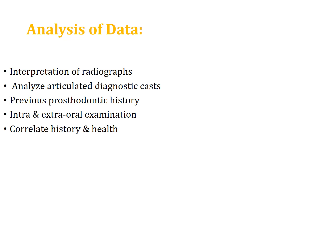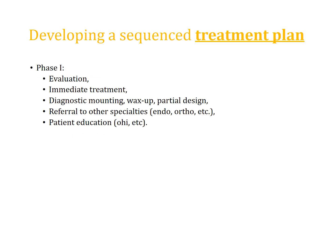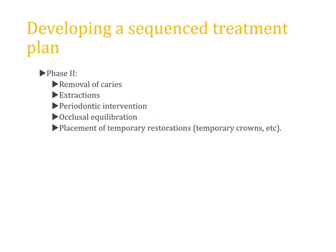You have to analyze all these factors — the radiograph, diagnostic cast, dental history, medical history, intraoral examination, and overall health of the patient — to formulate the treatment plan. The various phases of treatment are: Phase 1 — evaluation, immediate treatment, diagnostic mountings, and referral to other specialties for endodontic treatment, orthodontic uprighting, or extractions as needed. Phase 2 — removal of caries, extractions, and preparation procedures.